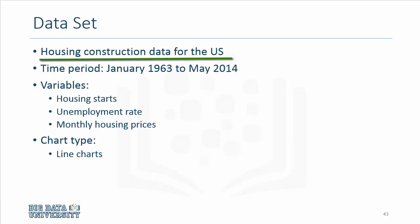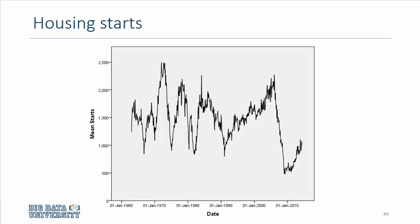We are looking at housing construction data, or new housing starts, from a period covering January 1963 to May 2014. We will demonstrate how to visualize this data using line charts. In this graphic, you would see that housing starts average around 1.5 million — even though it says 1,500, it's actually 1,500 times 1,000, so they average around 1.5 million.